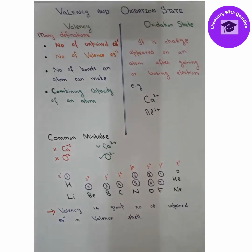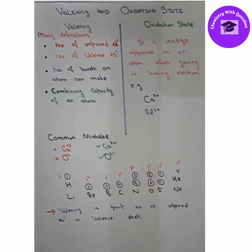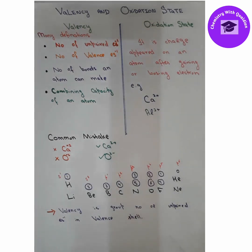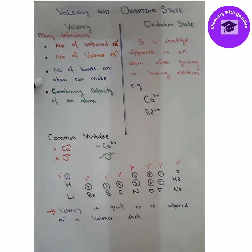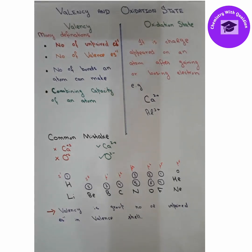Now let's talk about another concept in inorganic chemistry that is very confusing — the two terms valency and oxidation state. These are two totally different terms in inorganic chemistry that are often considered the same, but they are not. Valency is the number of unpaired electrons, the number of valence electrons, the number of bonds an atom can make — the combining capacity of an atom. Valency is basically the group number or the number of unpaired electrons in the valence shell.